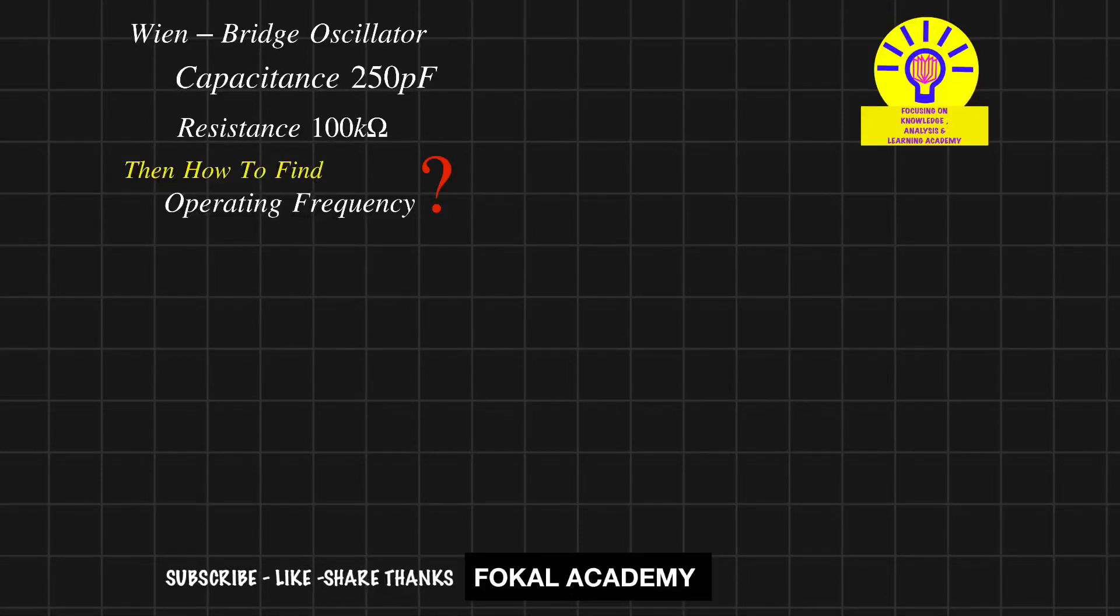Hi, dear one, welcome to Focal Academy. Seeing this problem here, a Wien bridge oscillator is given. In that Wien bridge oscillator, the capacitance value is given as 250 picofarads and the resistance value is given as 100 kilohms. Then how can you find the operating frequency?